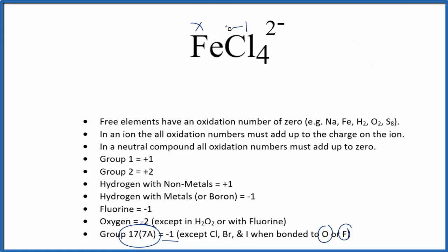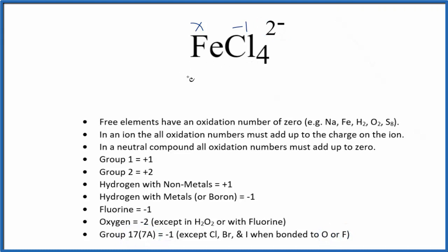And we know that it all adds up to 2-. So let's set an equation up. We could say x, that's the iron, minus 1 times 4, we have 4 chlorines. And then the whole thing, that's going to equal the charge on the ion. That's that negative 2. So x minus 4 equals negative 2. We add 4 to both sides, we will get x is a positive 2.